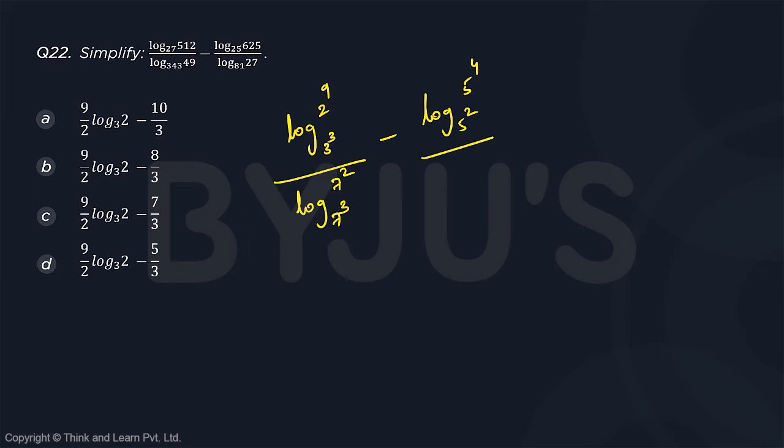25 is 5 square, by log 27 is 3 cube and 81 is 3 power 4. So this becomes 9 by 3 log 2 base 3 divided by 2 by 3 log 7 base 7 is 1, minus 4 by